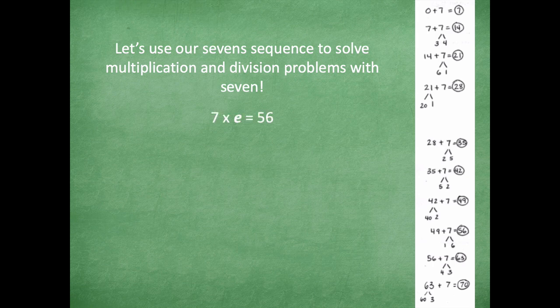So we're going to do the same thing. This time we're going to do seven times E equals 56. So you guys are going to go over, find your 56 on your seven sequence and see how you can come up with what E equals. Okay, now before you do that, I want to use the commutative property and flip flop these factors.